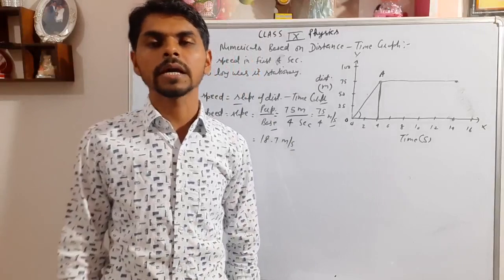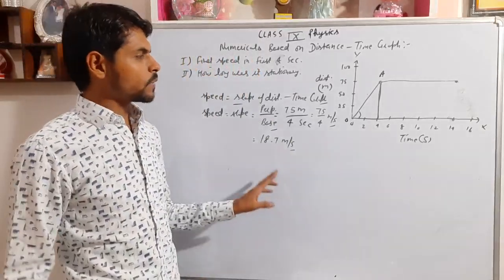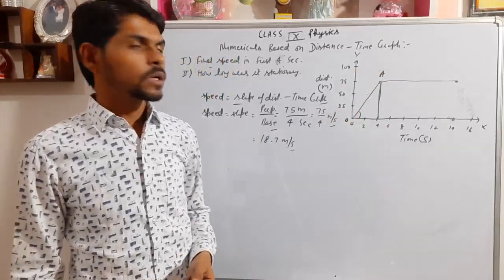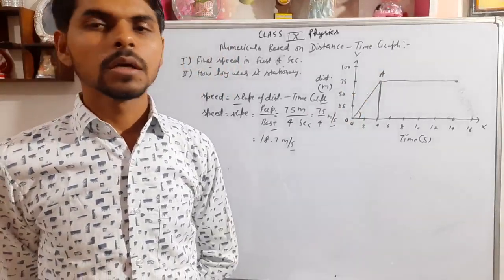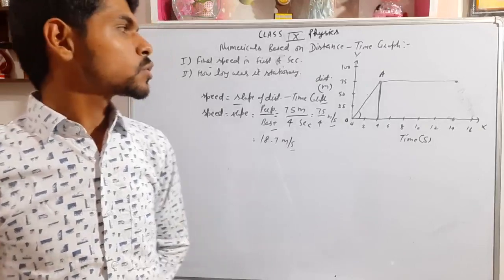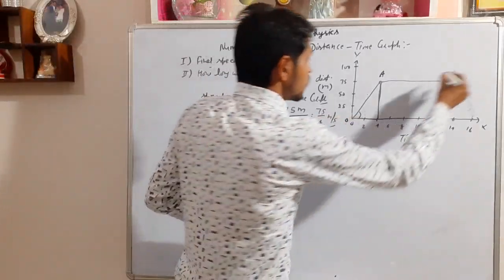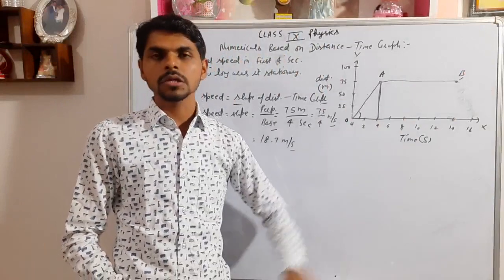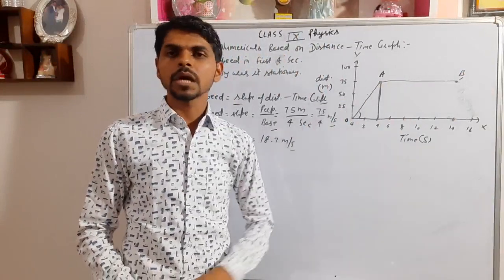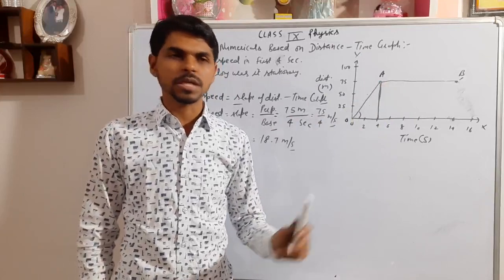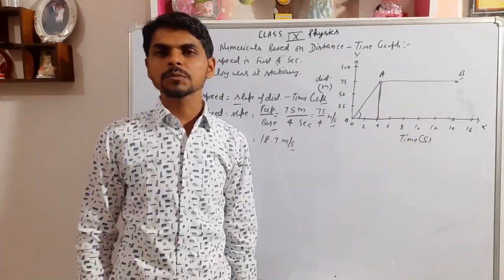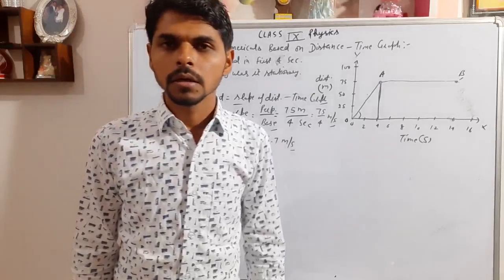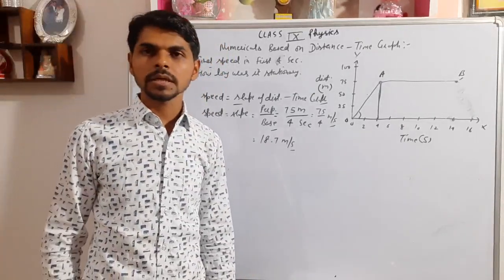So the body was at rest for 10 seconds. From O to A the motion is uniform motion, because the graph is a straight line. From A to B, the graph is parallel to the time axis — time is changing but position is not changing. At 4 seconds the position is 75 meters, and at 14 seconds it is still 75 meters. This confirms the body is at rest from A to B.